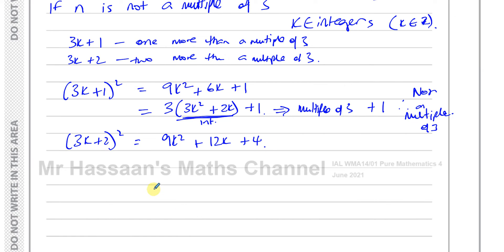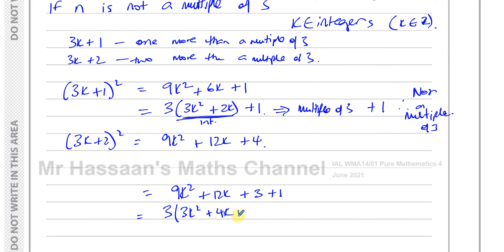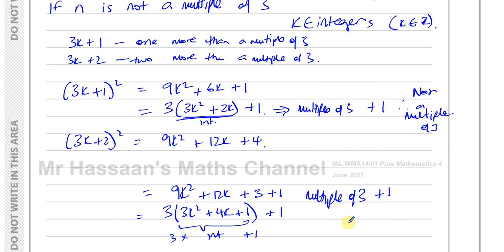For (3k + 2)² = 9k² + 12k + 4, we rewrite +4 as +3 + 1, giving 9k² + 12k + 3 + 1 = 3(3k² + 4k + 1) + 1. Again this is 3 × (an integer) + 1 — a multiple of three plus one — so this is also NOT a multiple of three.